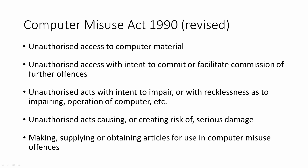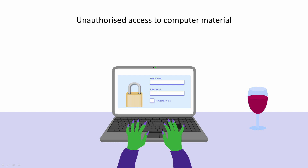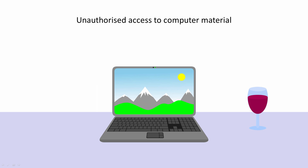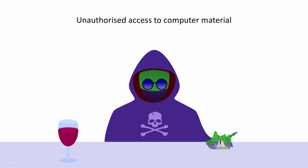The first section of the Computer Misuse Act forbids unauthorised access to computer material. A person is guilty of this offence if they access a programme or data on someone else's computer without their permission. This is usually done over the internet and is commonly known as hacking.